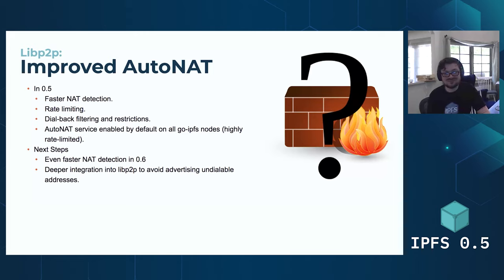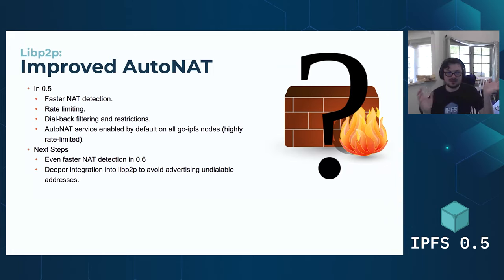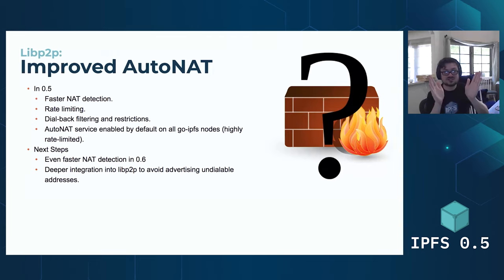In 0.6, we're going to have even faster NAT detection — basically more event-based. So instead of polling on some interval, when we see a new peer we just ask them, 'Am I public or am I private?' That should bring the time down to a very short period. And deeper integration with libp2p: we currently detect a bunch of external addresses but aren't sure which ones actually work. If we can integrate AutoNAT tightly with this other part of libp2p, we can reduce the number of addresses advertised, which will speed up a lot of network operations because instead of trying to connect to a bunch of addresses where some may not work, you only try the addresses that will work.